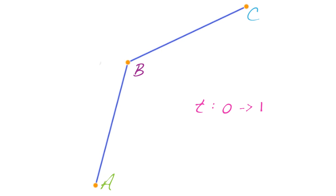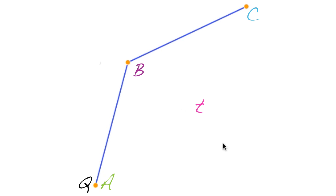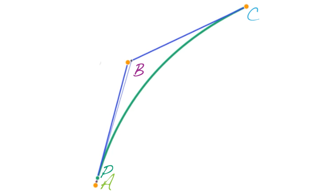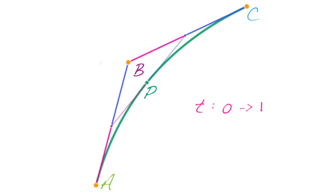As T goes from zero to one, our new point — let's call it Q — goes from A to B. Let's do the same thing for the other line segment, calculating a point R between B and C. Finally, we'll use the same method between Q and R to calculate P, which is a point on our curve. As T goes from zero to one, P traces out the smooth curve.